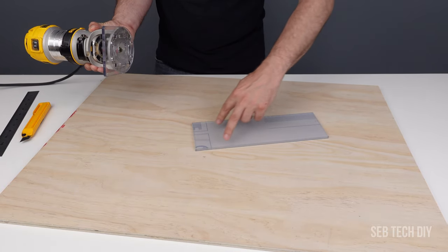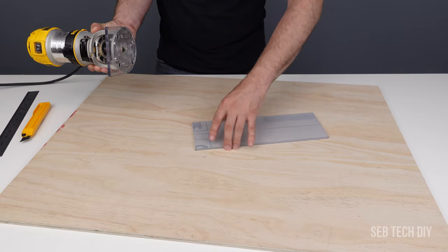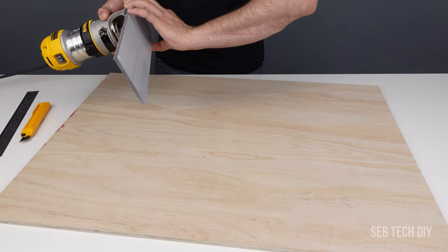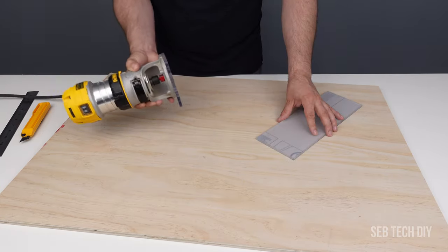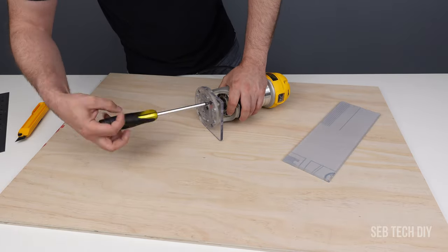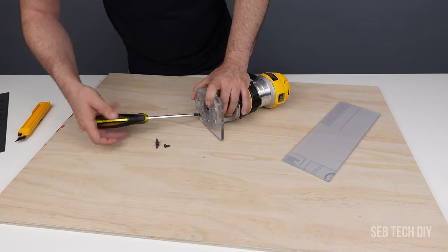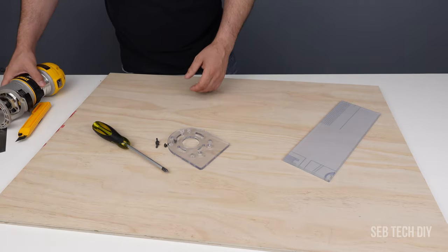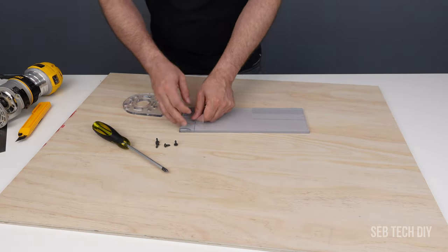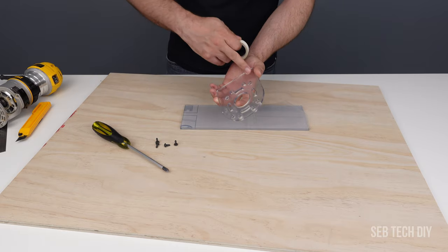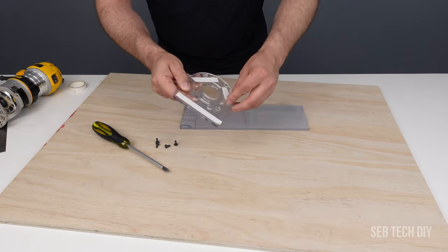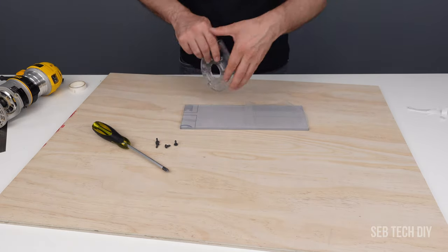I still need to make some holes in the new lexan piece so I can screw it to my router. But before I can do so I need to take off the original router base. I'm using some two-way tape to stick the base on my lexan sheet. It will act as a guide to give me the exact location of each hole I need to drill.